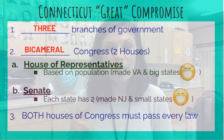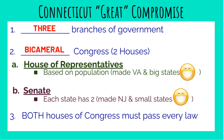Under the Connecticut or Great Compromise, we would have a three-branch government. We'd have a bicameral Congress with two houses. The House of Representatives would be based on population — this made Virginia and the big states happy. We'd also have a Senate where each state would have two representatives — this made New Jersey and the small states happy. Both houses of Congress were required to pass any law. The Great Compromise made its way into the Constitution.